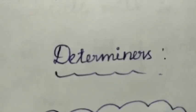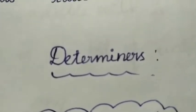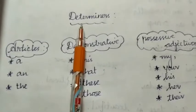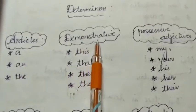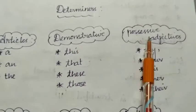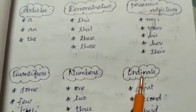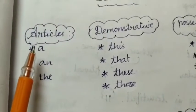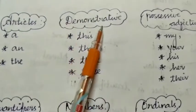Now let's see determiners. A determiner is a word that comes at the beginning of a noun; it introduces and determines the noun, and indicates whether a noun is specific or general. The types of determiners are: articles, demonstratives, possessive adjectives, quantifiers, numbers, and ordinals. Words under articles are 'a', 'an', and 'the'.